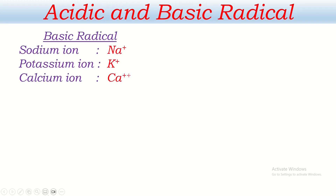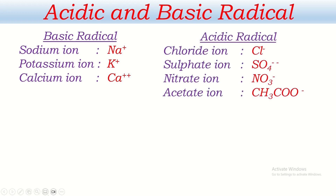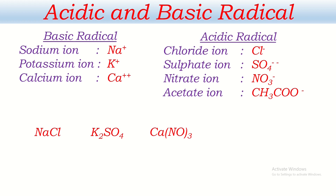When a basic radical combines with an acidic radical, they form a salt. When sodium combines with chlorine, it forms sodium chloride. Potassium combines with sulfate to form potassium sulfate, or with chlorine to form potassium chloride. Calcium radical combines with nitrate radical to form calcium nitrate. These compounds are formed by the reaction of acid and base — acidic radical combines with basic radical to form a salt. Sodium radical combining with acetate radical forms sodium acetate.